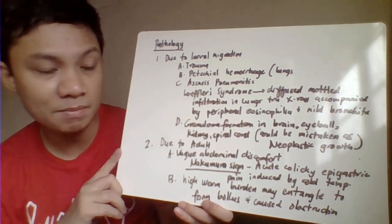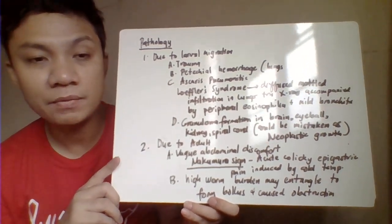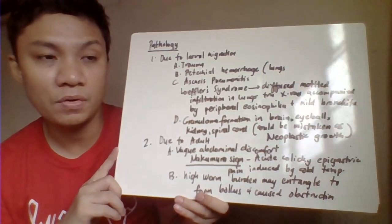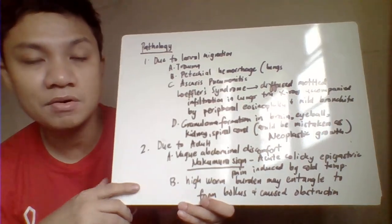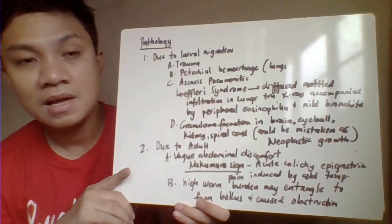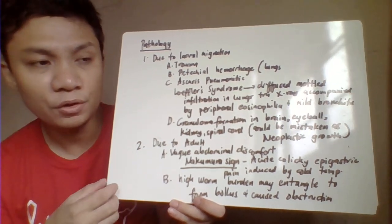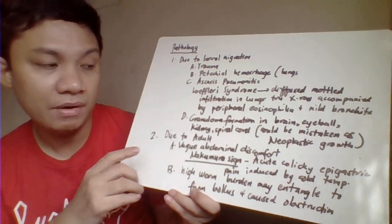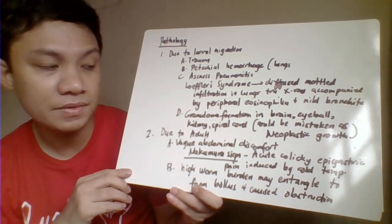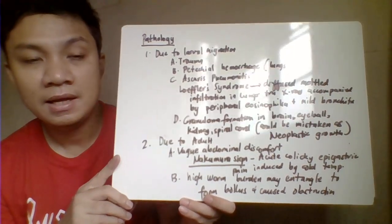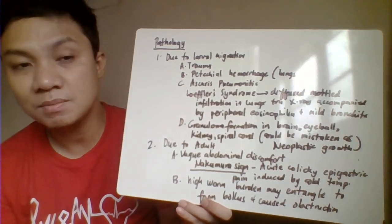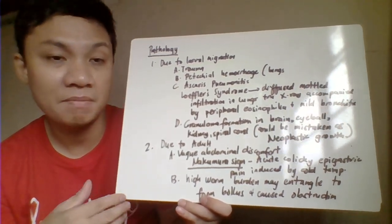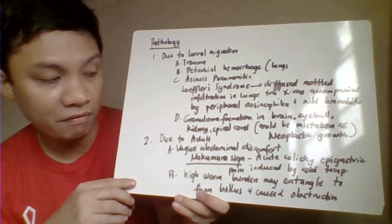We also have granuloma formation which could be mistaken as neoplastic or cancer cells. These granulomas can be found in other parts of your body including your brain, eyeballs, kidneys, and spinal cord. Wherever this parasite can go, it might cause some manifestation in the form of granuloma formation.